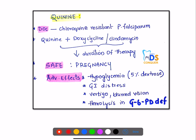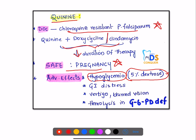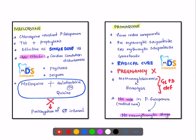Quinine is the drug of choice for chloroquine-resistant Plasmodium falciparum. Combining quinine with doxycycline or clindamycin decreases the duration of therapy. It is also safe to use in pregnancy. Adverse effects include hypoglycemia — so 5% IV dextrose should be administered alongside quinine — as well as GI distress, vertigo, blurred vision, and hemolysis in G6PD-deficient patients.